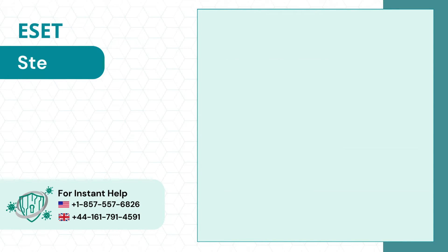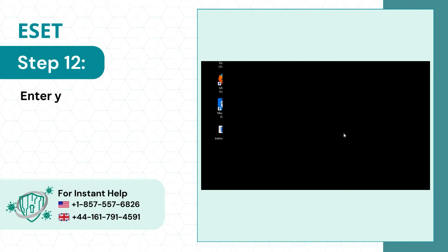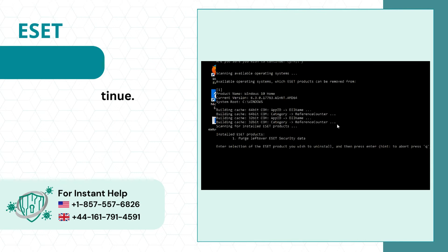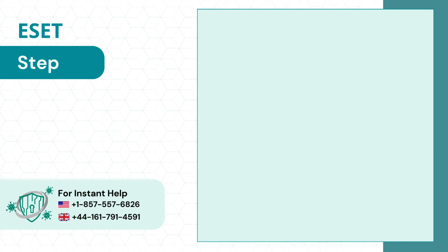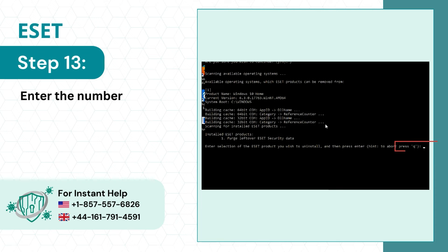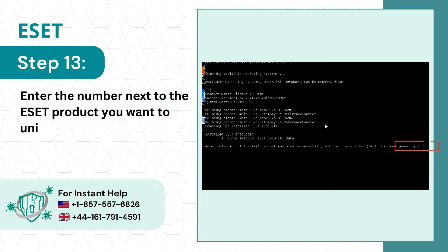Step 12: Enter Y to continue. Step 13: Enter the number next to the ESET product you want to uninstall.